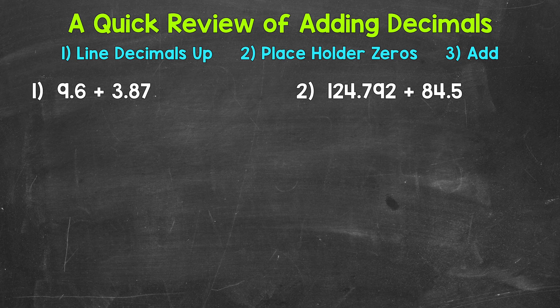Here are a couple of examples to get this down. Let's jump into number 1, where we have 9 and 6 tenths plus 3 and 87 hundredths.